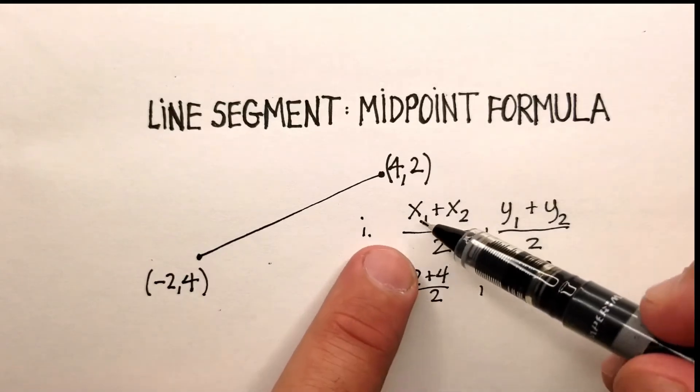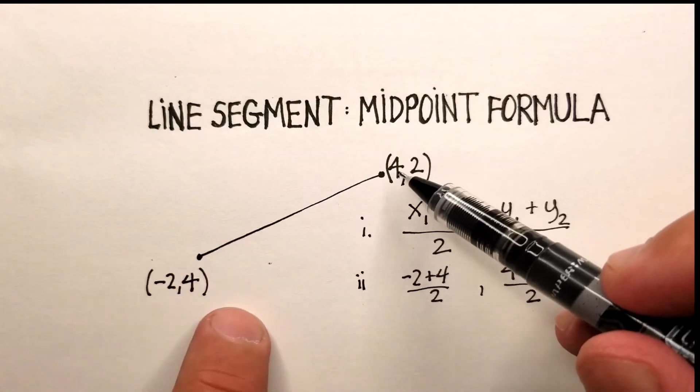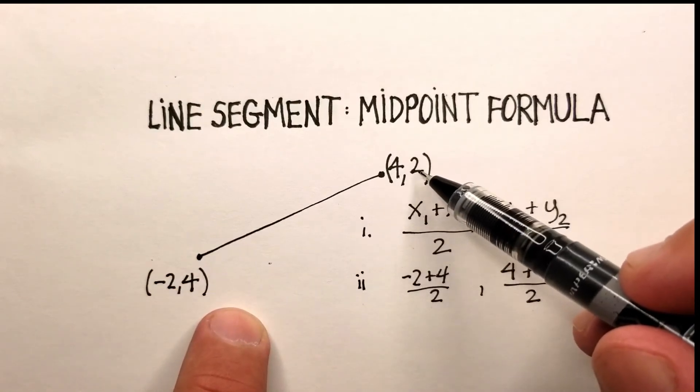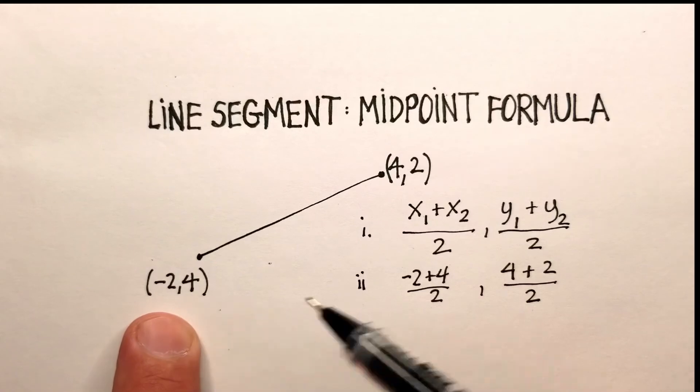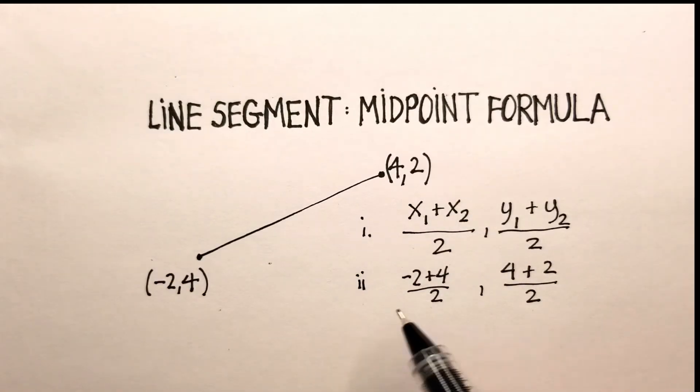Now, it should be known that the x1 and the y1 can be either one of these. Just be consistent. So if this is your x1, this is going to be your y1. If this is your x1, this has to be your y1. And same thing with the x2 and y2. Let's continue.